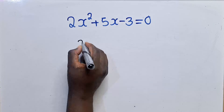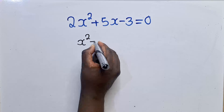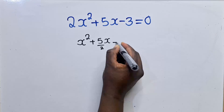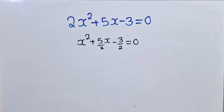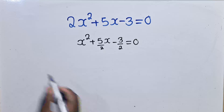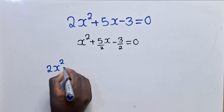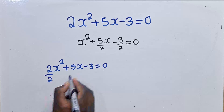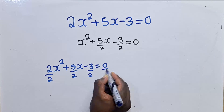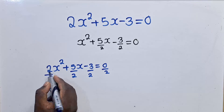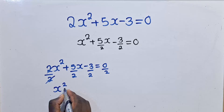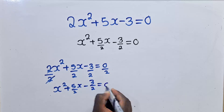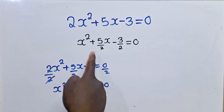What we normally do here is divide throughout by the coefficient. Once you divide throughout by two, we know that we've got 2x² + 5x - 3 = 0. So we divide throughout by the coefficient right in front, and we remain with x² + (5/2)x - 3/2 = 0, which is what we have right over here.